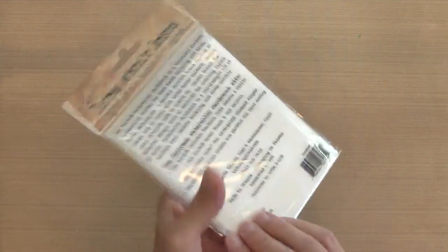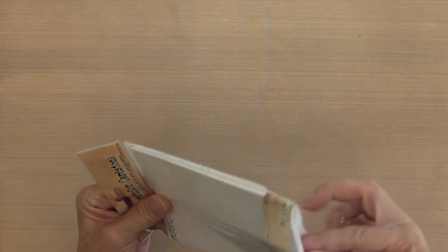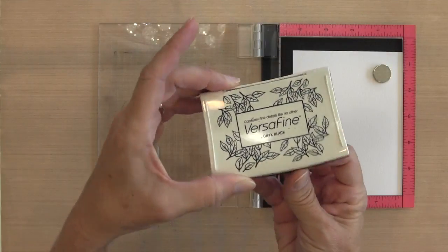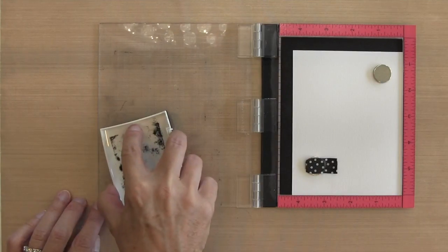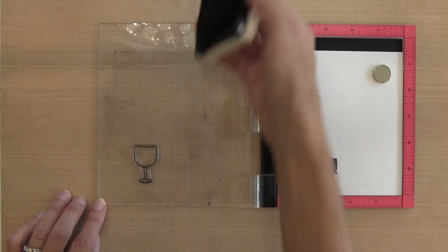I'm using the Distress Watercolor cardstock simply because it is a bright white color. Mine comes in A2 size. And there's a smooth side and a textured side. And whenever I'm going to be stamping, I use the smooth side just because it's easier to get a good image.